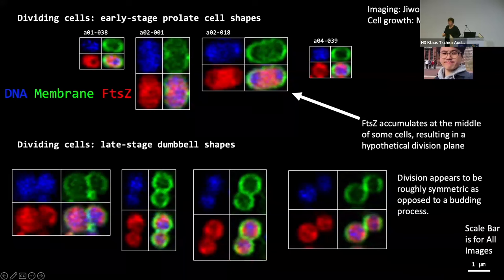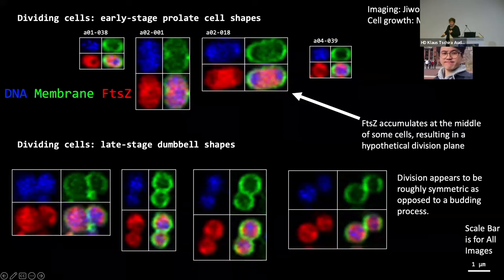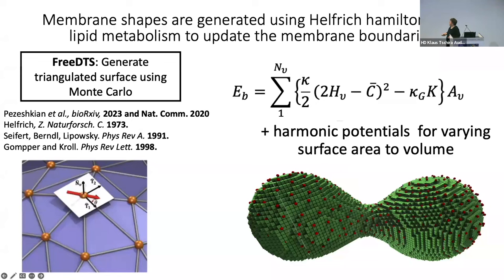We did not have a good model for the formation of the septum — FTSZ requires about four other proteins, and we can get it to bind but can't get it to treadmill at the moment. So instead, we assumed symmetry and used our growth rate from lipid metabolism. For the movie, we use a Helfrich Hamiltonian, developed over 50 years, and in particular the newest version by Pezeshkian at the University of Copenhagen. This Hamiltonian gets updated from the lipid metabolism on the area-to-surface, surface-area-to-volume ratio. With that, we can grow the cell and get it to start dividing.